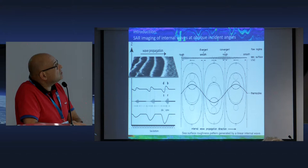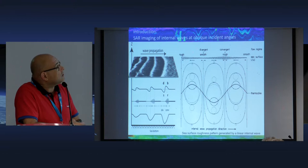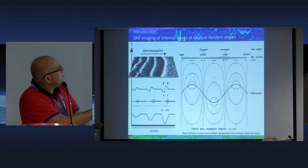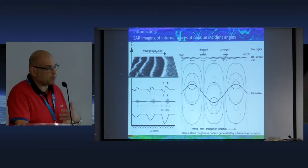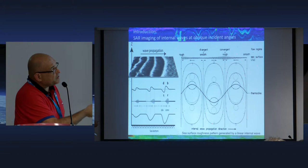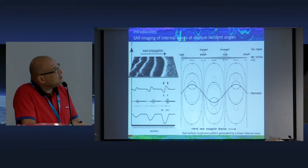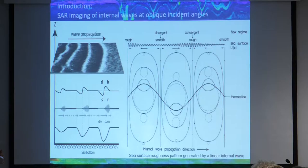Most people here know how to identify and interpret signatures in SAR of internal solitons. They are typically produced by bright and dark bands in succession, and they delineate the direction of propagation, so you can interpret them. They are produced essentially by roughness — a result of horizontal gradients, convergences and divergences at the sea surface of capillary gravity waves.